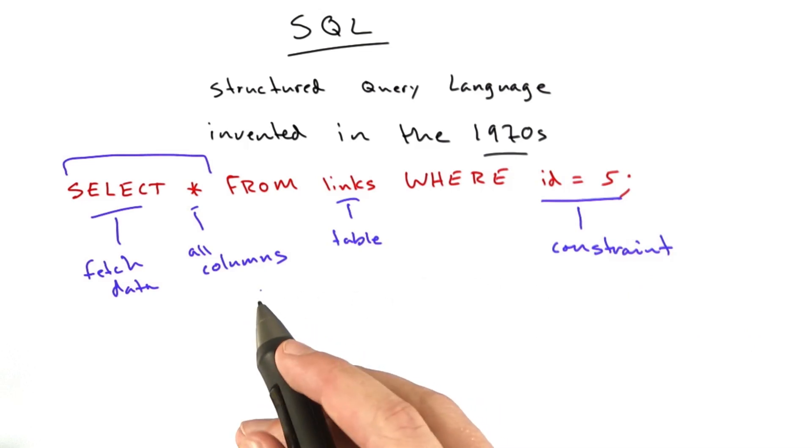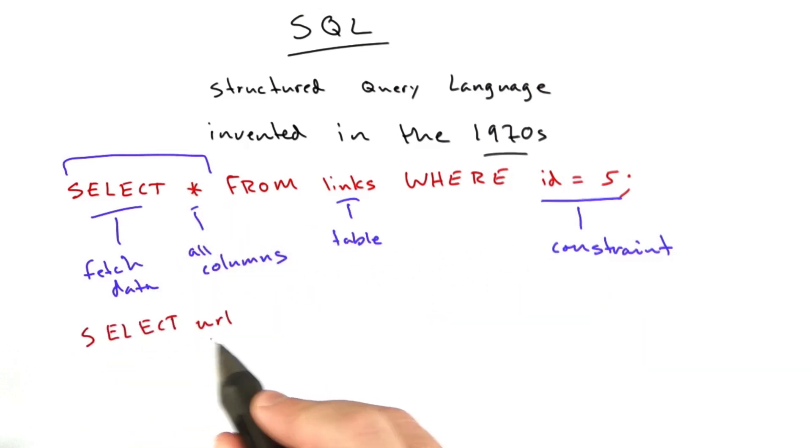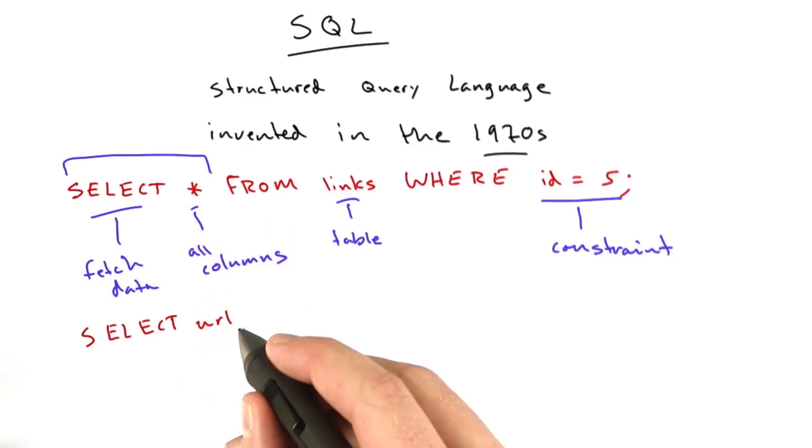But if you don't want all of the columns, let's say you just wanted the URL from the links, it might look something like this: select URL. And you could put comma, select URL title, if you wanted to select just the URL and the title. But we'll be using star for now.